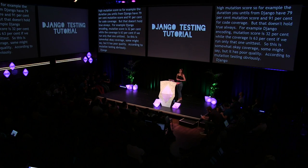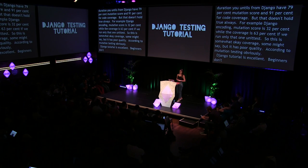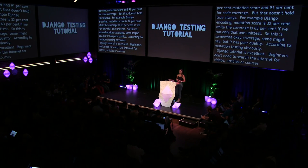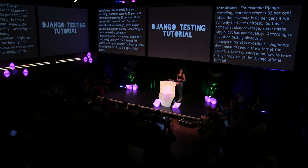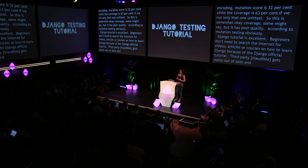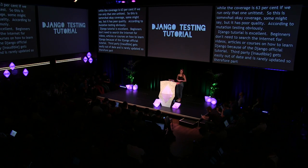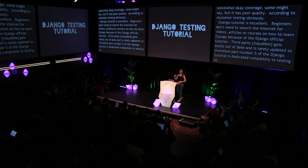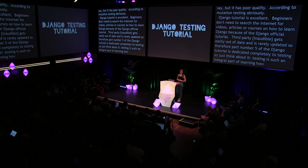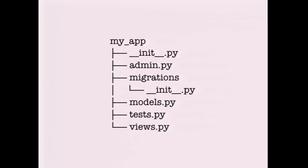Django's tutorial is excellent. Beginners don't need to search the internet for videos, articles, or courses on how to learn Django because of the official tutorial. Third-party documentation gets easily out of date. Part five of the Django tutorial is dedicated completely to testing — testing is such an integral part of learning how to use a framework. One of the biggest reasons developers don't test is that setting up a test framework takes time and is tiresome, so it becomes a low priority. When you create a new app or start a project with Django, it creates a test file for you and encourages you to start writing tests. The testing framework becomes a powerful tool to motivate people to write tests, especially beginners.